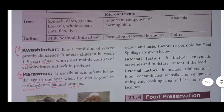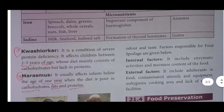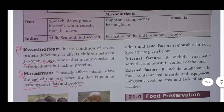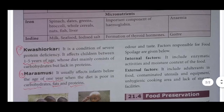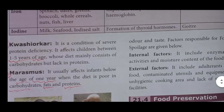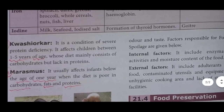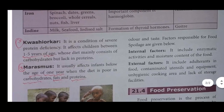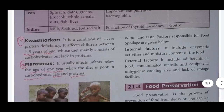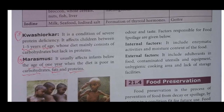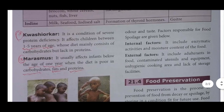Kwashiorkor occurs due to severe protein deficiency. It affects children between 1 to 5 years of age whose diet mainly consists of carbohydrates but lacks protein. Marasmus affects infants below one year of age when the diet is poor in carbohydrates, fat and protein.